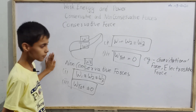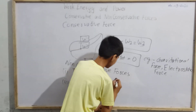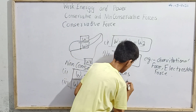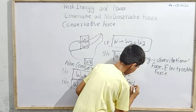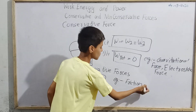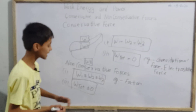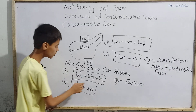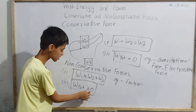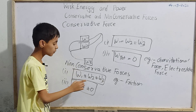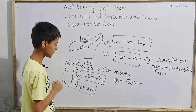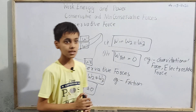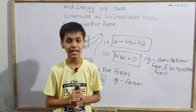Examples of non-conservative forces: friction is an example of a non-conservative force. When friction acts, we can see that the total work done W_total is not equal to zero, and all work done along the given paths are unequal. That is why friction is a non-conservative force. So that was today's topic — thank you.